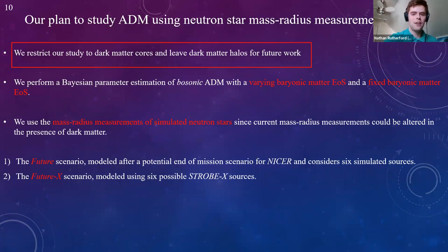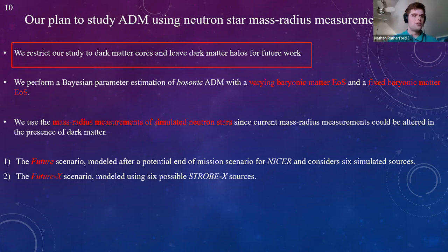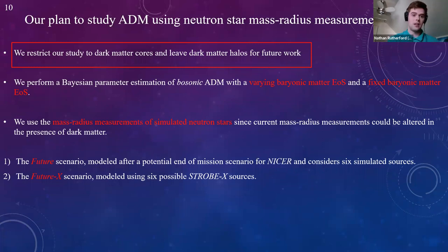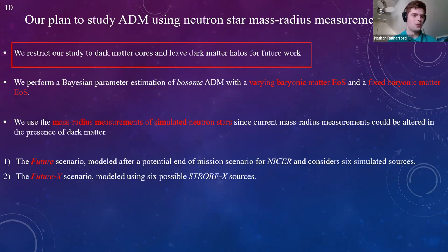We also study the fixed baryonic equation-of-state case, which may be interesting to those developing theoretical models or baryonic equations of state from heavy ion collisions. Because ADM can alter the oblateness relations for neutron stars, we decided to use synthetic mass-radius regimes from simulated neutron stars. In this Bayesian parameter estimation, we consider two scenarios: a 'future' scenario modeled after a potential end-of-mission NICER scenario with six simulated sources, and a 'future X' scenario modeled using six possible STROBE-X sources.